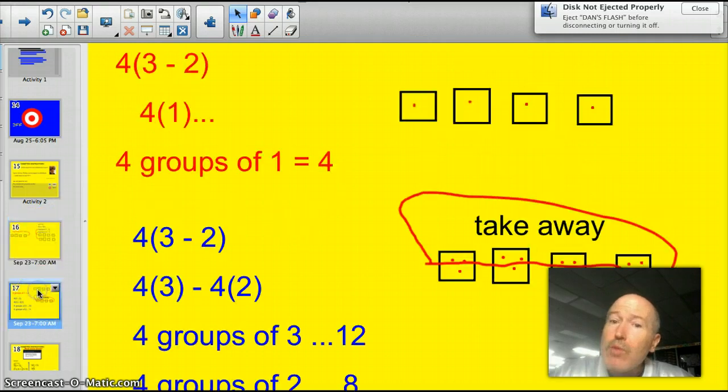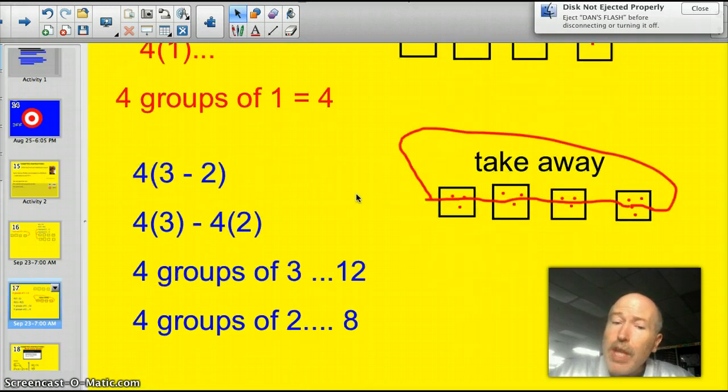It works that way for subtraction, too. Look at the same problem here. Or a similar problem. We have 4 times 3 minus 2. Well, I can simplify that, do the parentheses first, and say that's 4 times 1, correct? 4 groups of 1 equal 4. Here are my 4 groups of 1. But I could also take and distribute that out. Look at the way it works.